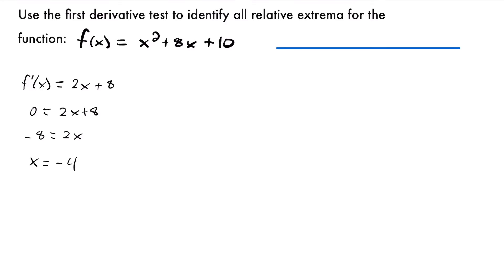Now we have our critical value of x equals negative 4. If we draw a number line — I like to think of it as the x-axis — and label our critical value of negative 4 right in the middle, we can see that we have two intervals. We're interested in all values from negative infinity to negative 4, and all values from negative 4 to positive infinity.